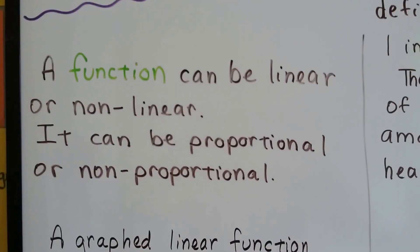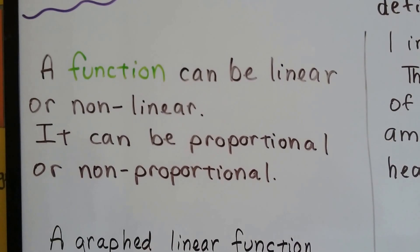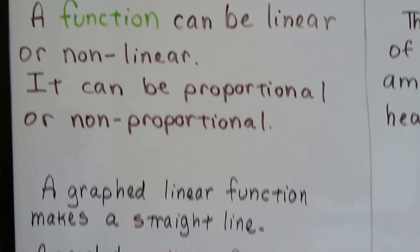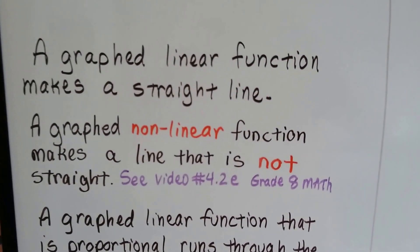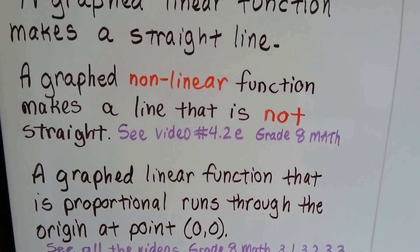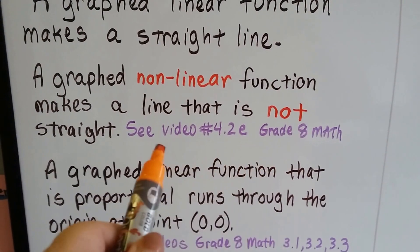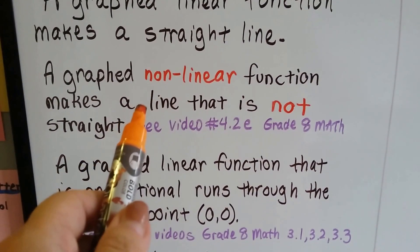A function can be linear or nonlinear, and it can be proportional or nonproportional. We learned that before in the previous videos. A graphed linear function makes a straight line, and a graphed nonlinear function makes a line that is not straight. You can see video 4.2e in this playlist for more information about that.